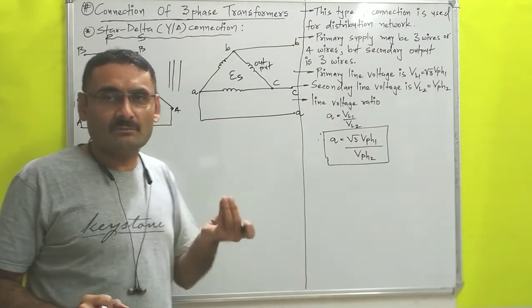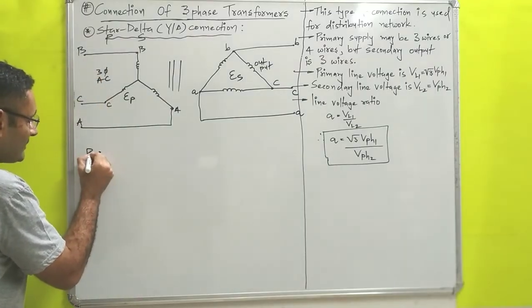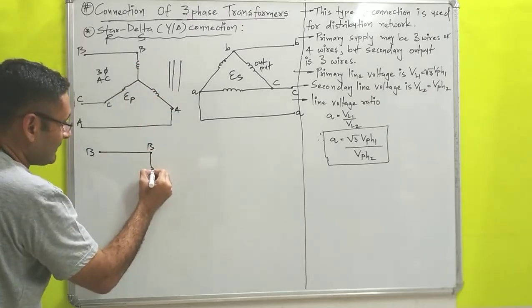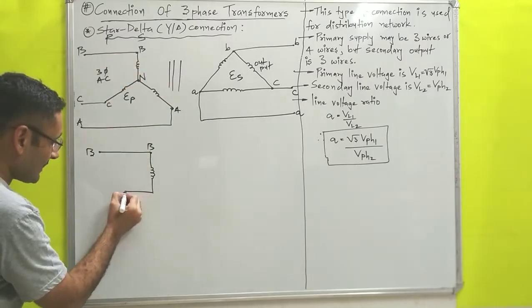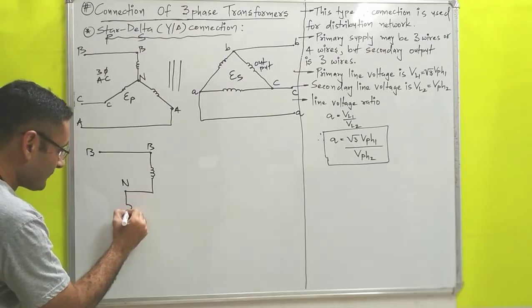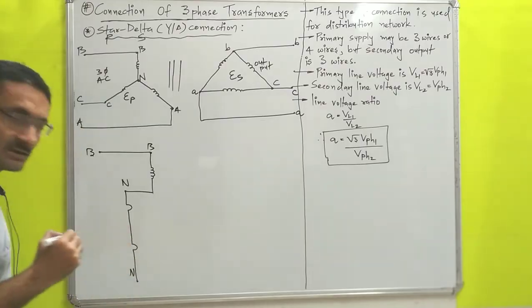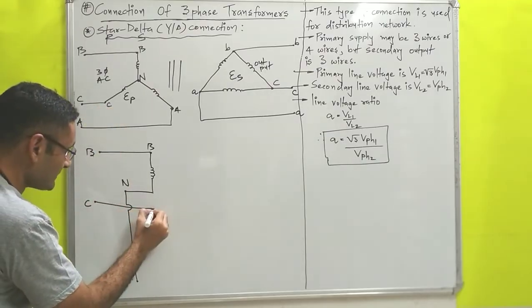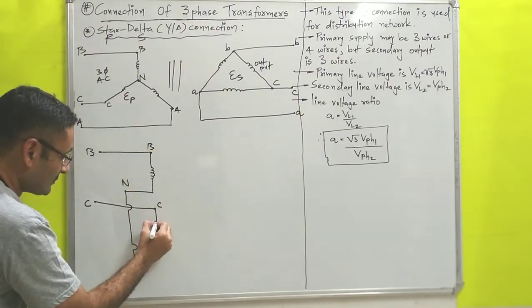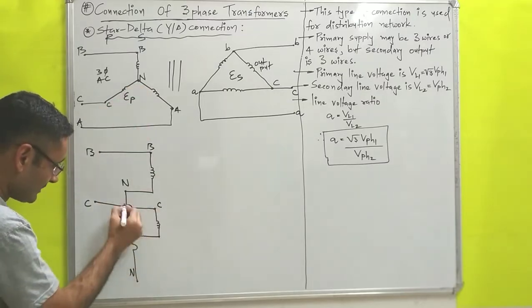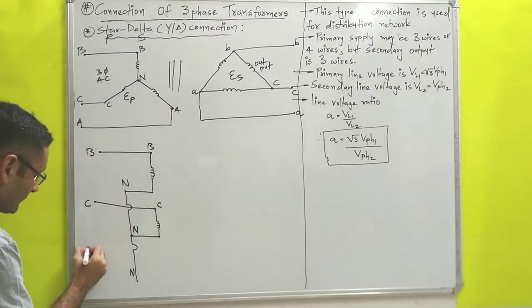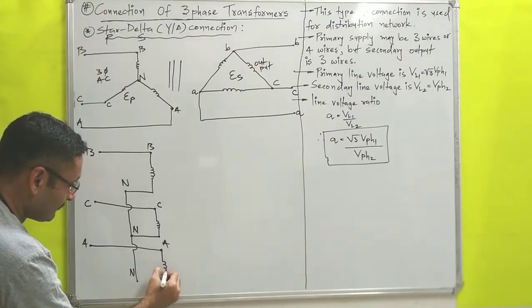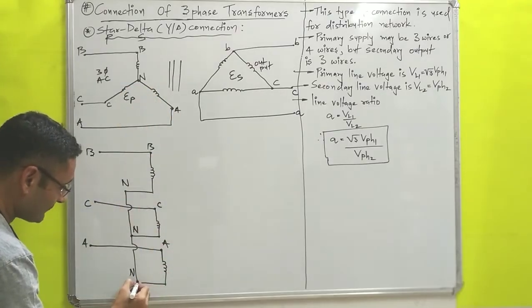Now we will understand the actual connection in the transformer, which is very important. On the primary star side: terminal B is connected with line conductor BB, and B is connected with one winding. That winding is connected to the common point which is neutral. Similarly, terminal C is connected with line conductor CC and one coil, which connects to neutral. Terminal A is connected with line conductor AA and one winding, which also connects to neutral. So that is our complete primary side.